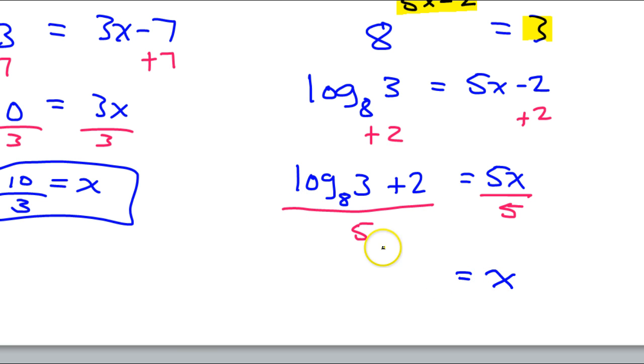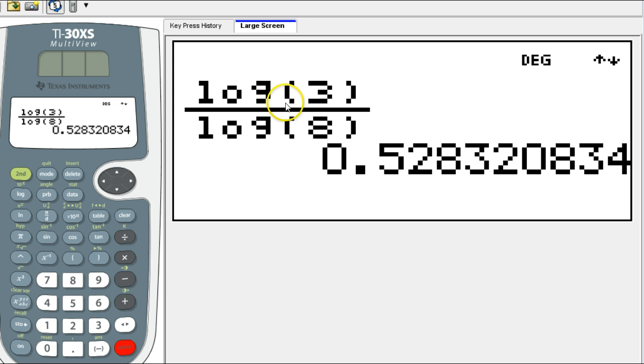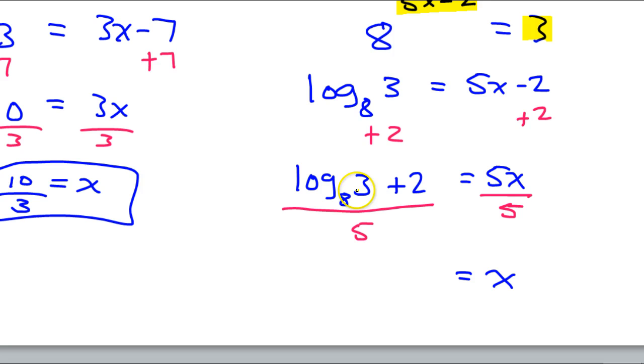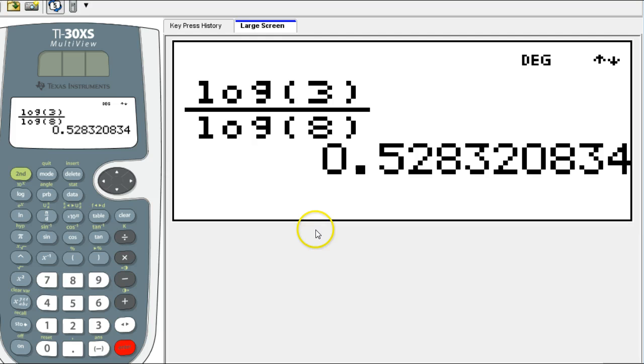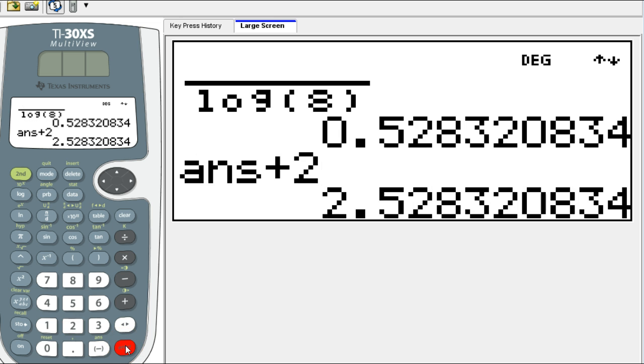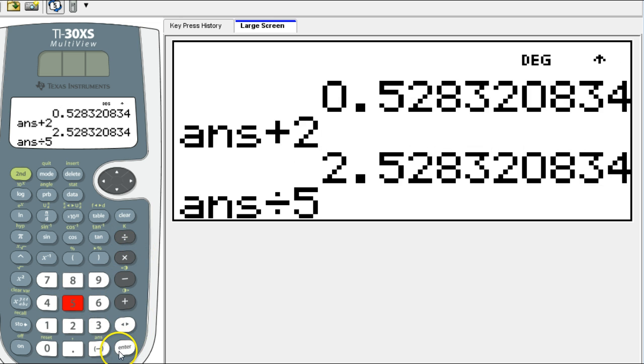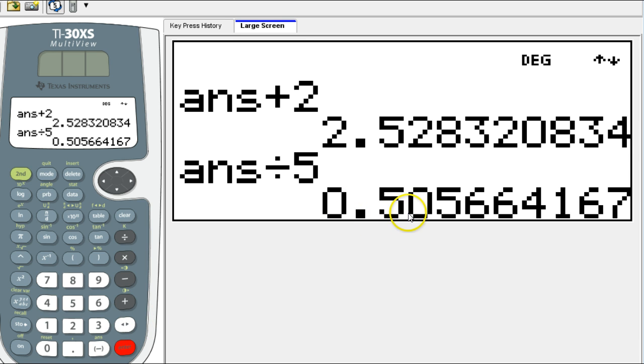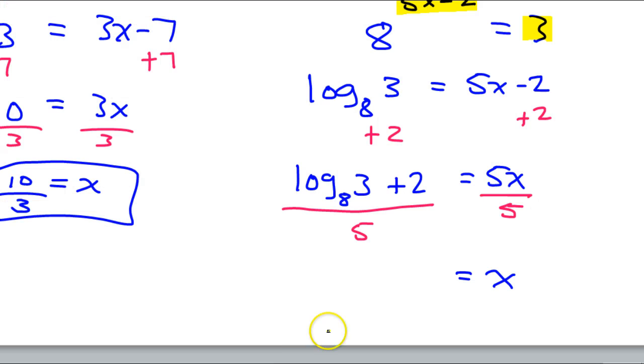So all we have to do is evaluate this expression. So we have log base 8 of 3. Again, in the calculator, we do this as log 3 over log 8. But then we have to add 2 to that, and then we're going to divide by 5. So I think the easiest thing to do is you can just do this, get the decimal, and then we can just add 2, hit enter, and then just divide by 5. So the answer is going to be 0.51. Got to round up. Nearest hundredth to decimal place. So that's your answer.